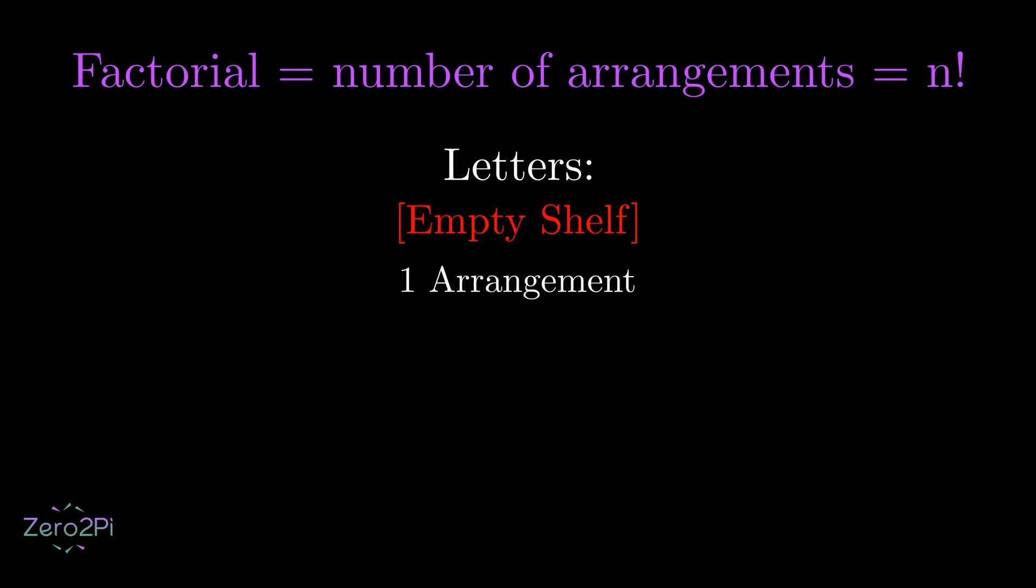In other words, the only way to arrange the zero letters is to arrange nothing and that itself is an empty arrangement, a single outcome. So, yes, the factorial of 0 is equal to 1.